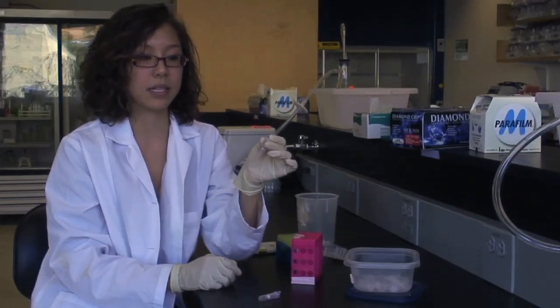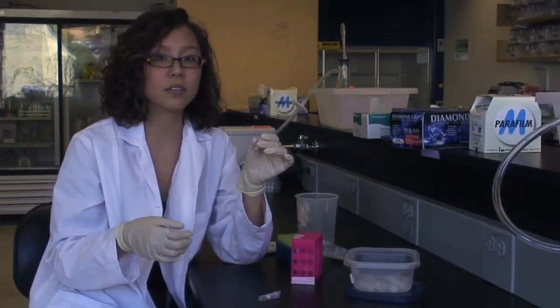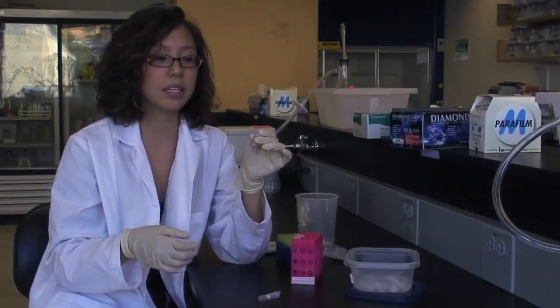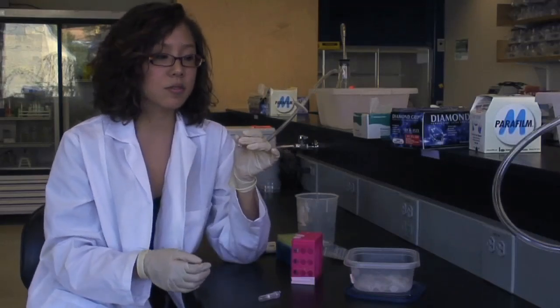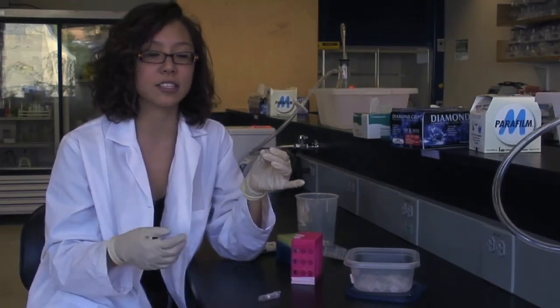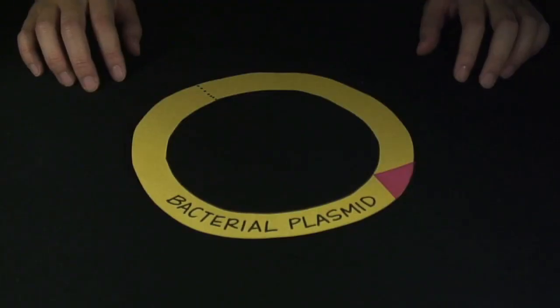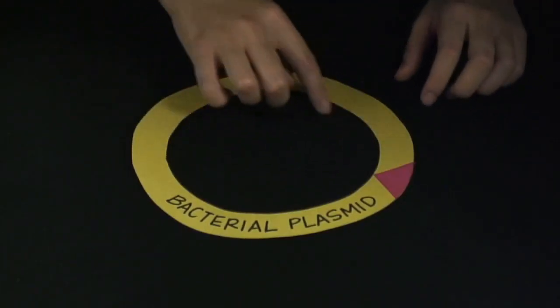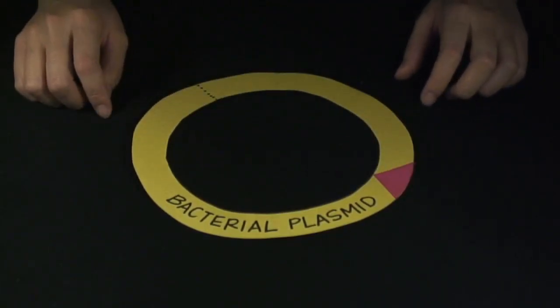Now, here's a tube full of plasmid. It's basically a circular ring of DNA that can exist in bacteria and it encodes for certain traits that affect how bacteria look or act or survive. To add our DNA from the frog to our bacterial DNA, we need to cut the plasmid open too.